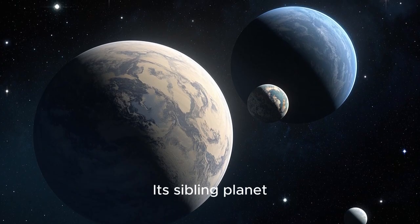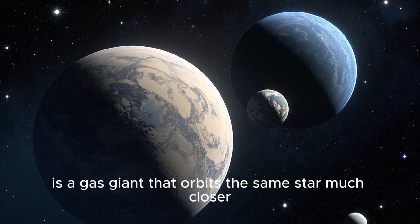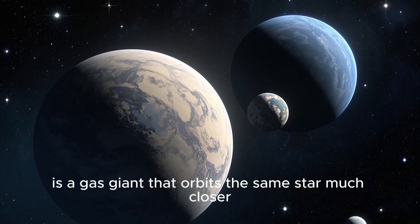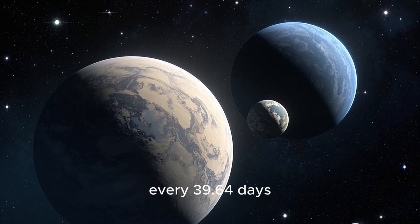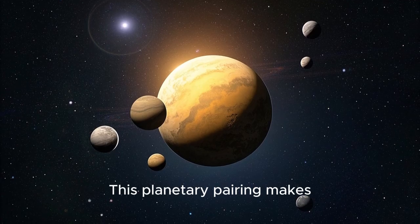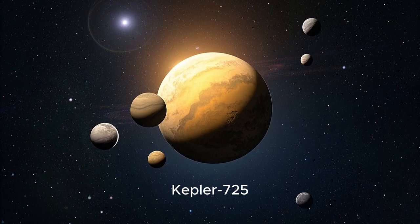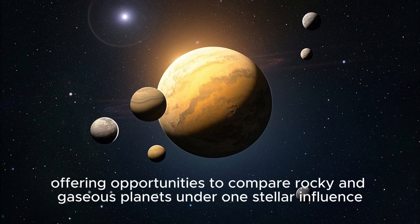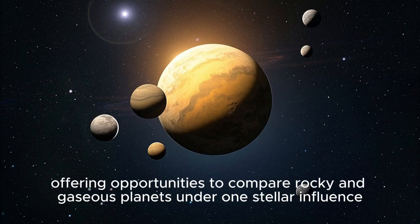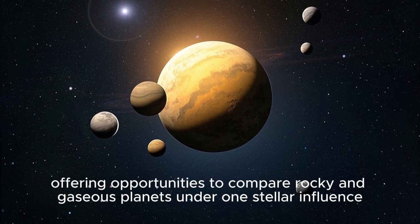Its sibling planet, Kepler-725b, is a gas giant that orbits the same star much closer every 39.64 days. This planetary pairing makes Kepler-725 a miniature solar system of its own, offering opportunities to compare rocky and gaseous planets under one stellar influence.